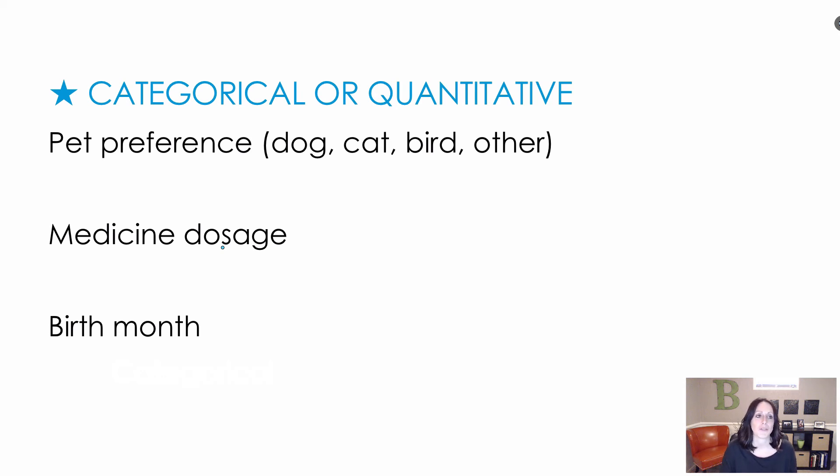For the first, we have pet preference: cat, dog, bird, or other. Obviously, this one would be a categorical variable.